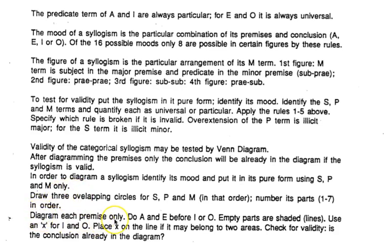Diagram each premise only. We're going to diagram A and E, which are the universals, before I and O, which are the particulars. Because the A and the E are going to be shaded and that removes possibilities. So empty parts are shaded, what doesn't exist, what's not, we're going to shade, almost like it's erased. We're going to use lines and we're going to use an X for the particulars, I and O. So X is particular, shading is universal. We're going to place an X on the line if it may belong to two areas.